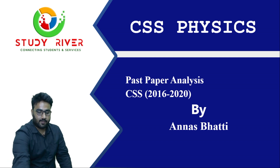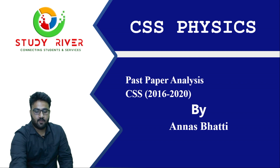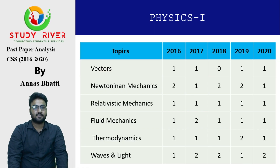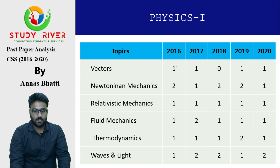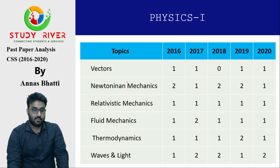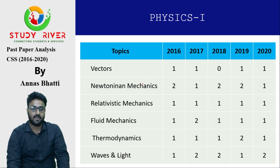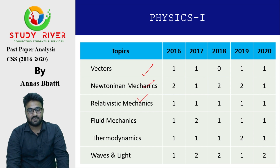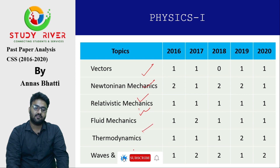Physics 1 is a bit of analysis in statistics from 2016 to 2020. If we can see, the physics syllabus is divided into 5 to 6 portions: there are vectors, Newtonian mechanics, relativistic mechanics, fluid mechanics, thermodynamics, and then there are waves and lights.